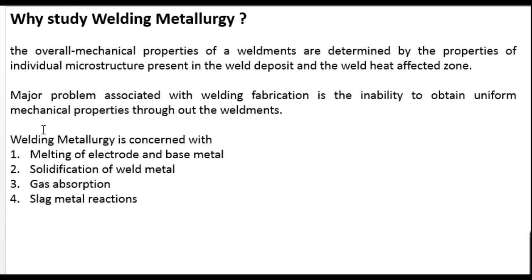The major problem associated with welding is that uniform mechanical properties are difficult to obtain. The main idea behind welding is that mechanical properties should be constant throughout — ideally better than the base plate, but at least constant. However, the heat input and metallurgy of the process makes obtaining uniform mechanical properties difficult. We should study weld metallurgy to understand how properties are changing and how we can control them. Weld metallurgy is concerned with melting of the electrode and base metal, solidification of weld metal, gas absorption, and slag-metal reactions.